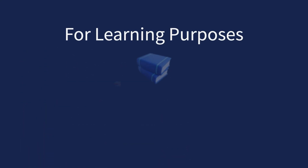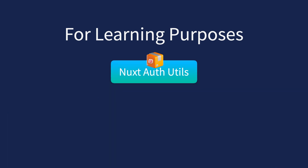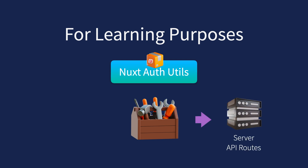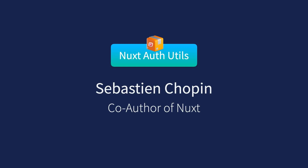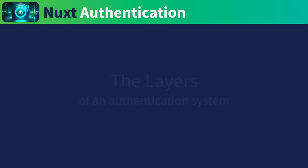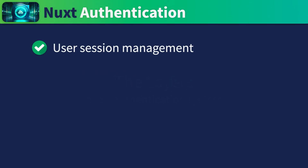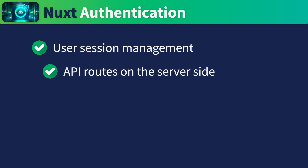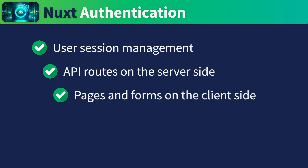As a web developer, you should be equipped with enough web security knowledge to write code that avoids obvious security flaws. So for learning purposes, in this course we'll be using a minimalist authentication library called Nuxt Auth Utils to implement an authentication flow that involves server API routes and front-end pages. This library is written by Sebastian Chopin, one of the original Nuxt library authors. Throughout the course, you'll learn about the different layers of an authentication system, user session management, implementation of API routes on the server side, and implementation of pages and forms on the client side.